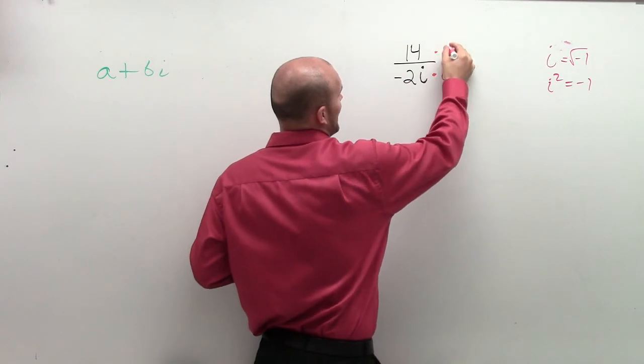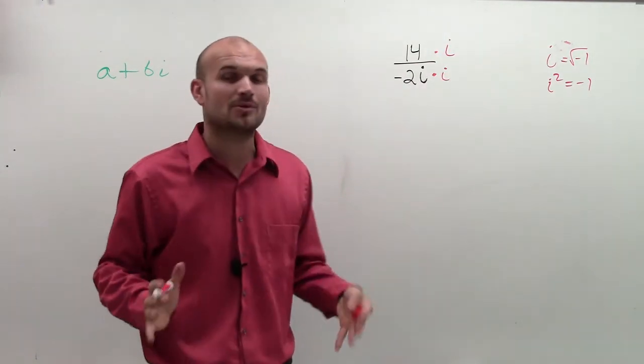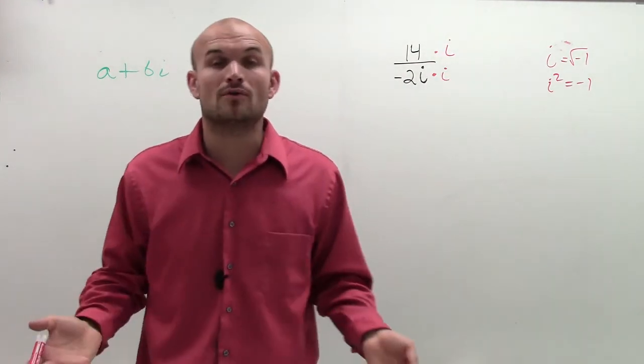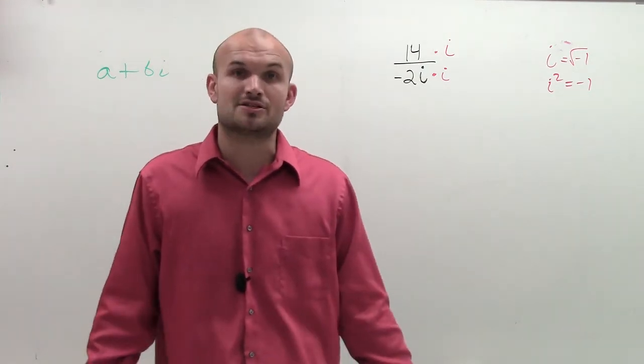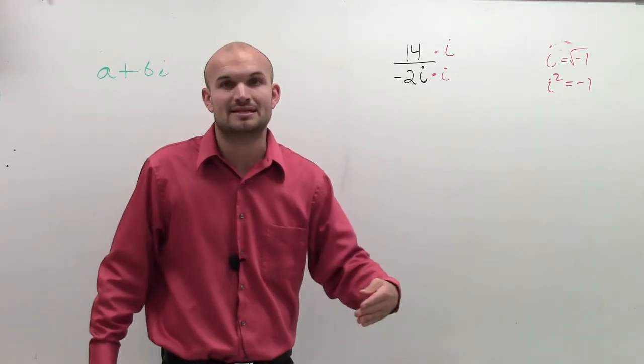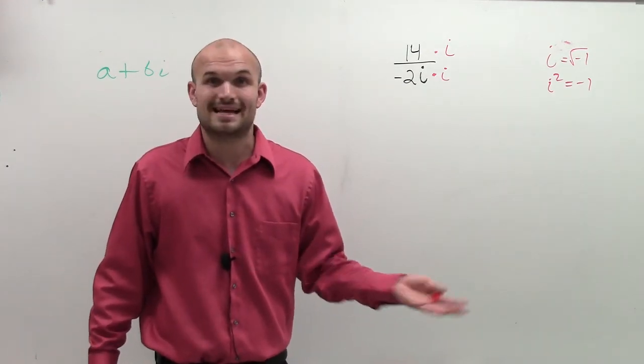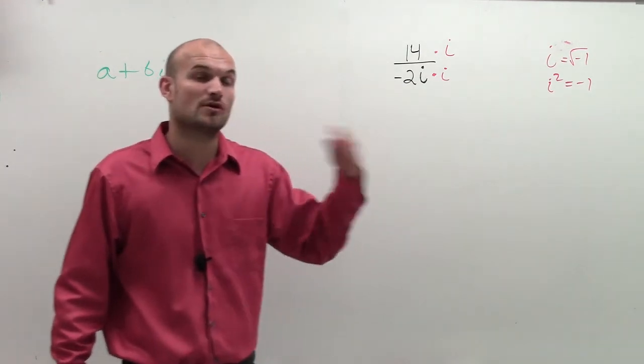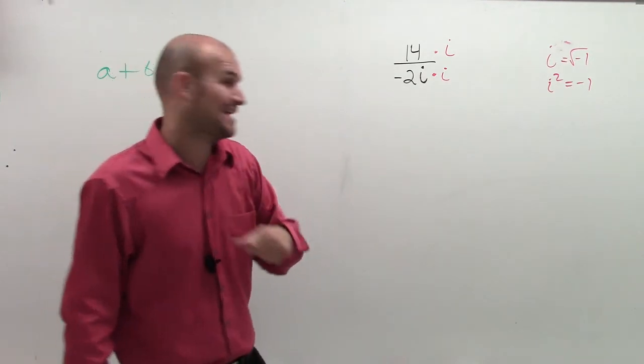I'm going to multiply by i on the top and the bottom. Make sure you multiply on the top and the bottom. If you don't, then you're not going to have equivalent fractions. If you don't have equivalent fractions, you're changing the answer, right? What's 1/2 times 2 on the denominator? That's 1/4. Not the same. 1/2 times 2 over 2 is 2/4. It's exactly the same.